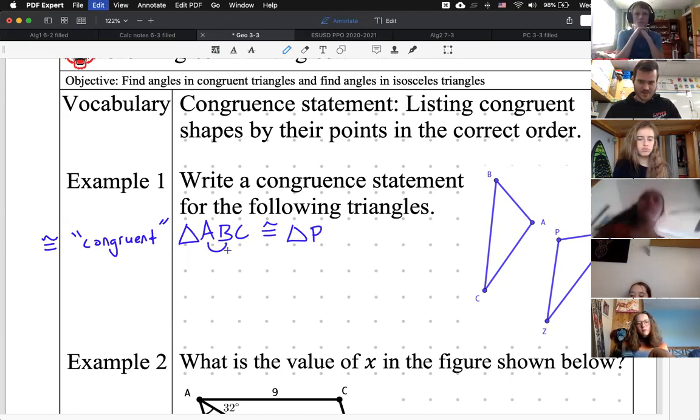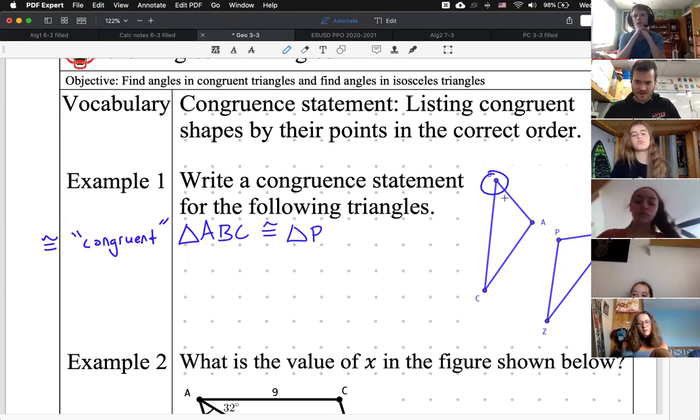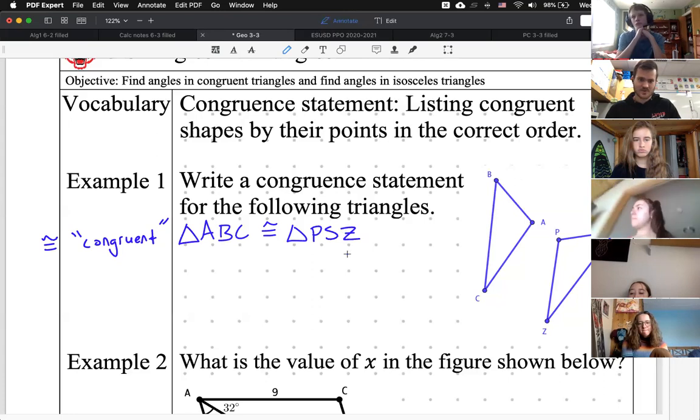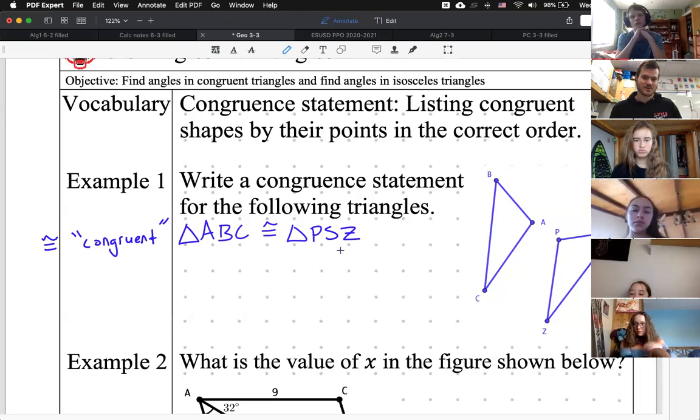It has to start with a P. And then it goes to B. Okay, so B is this angle up here, and you can see that's kind of the medium angle. It's not the super sharp one. It's not the obtuse one. So I have to say S next. So P, S, and then finally Z, or Z, if you're in college, right? That's how you write a congruency statement, and it has to be in the correct order.